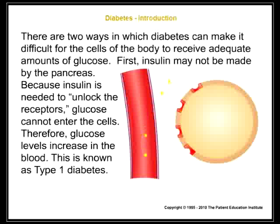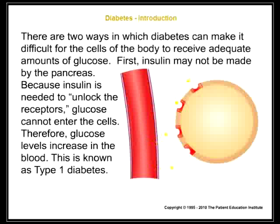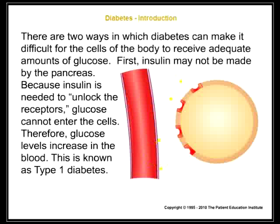There are two ways in which diabetes can make it difficult for the cells of the body to receive adequate amounts of glucose. First, insulin may not be made by the pancreas. Because insulin is needed to unlock the receptors, glucose cannot enter the cells. Therefore, glucose levels increase in the blood. This is known as type 1 diabetes.